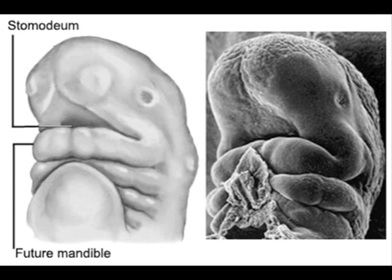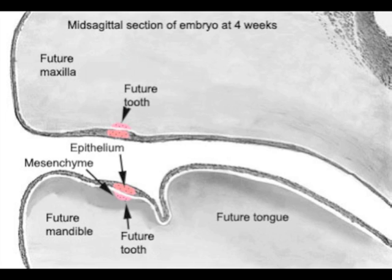The teeth begin developing in utero. The primitive mouth or stomodeum appears between the third and fourth week in the embryo. The mandibular and maxillary arches are formed in the fourth week. Within this primitive oral epithelium are layers of cells or laminae that will give rise to the teeth, formed by the interaction of cells of the oral epithelium and the underlying mesenchyme, whose cells originate from the cranial neural crest.